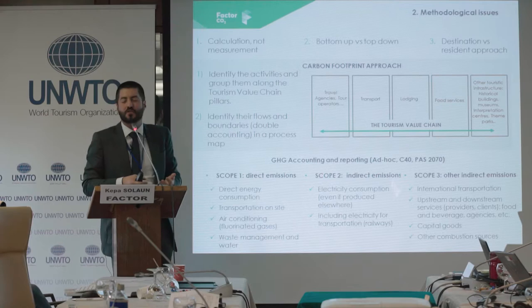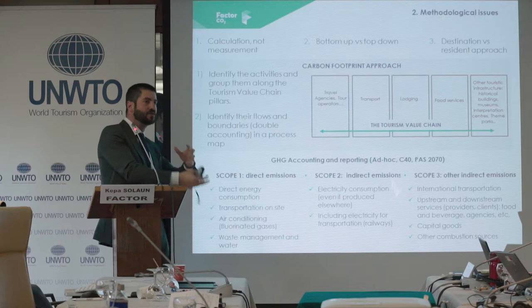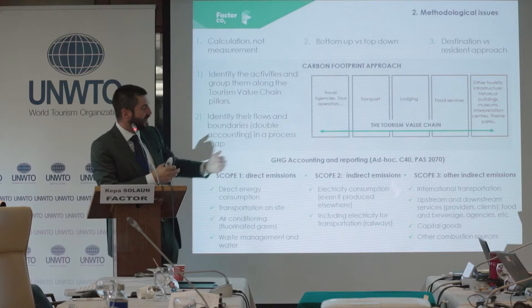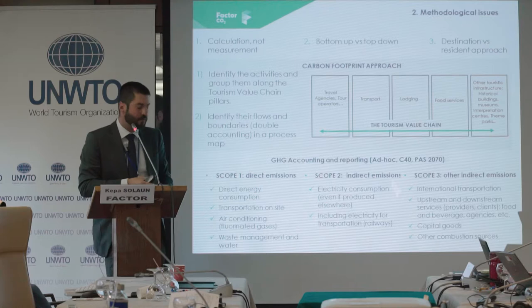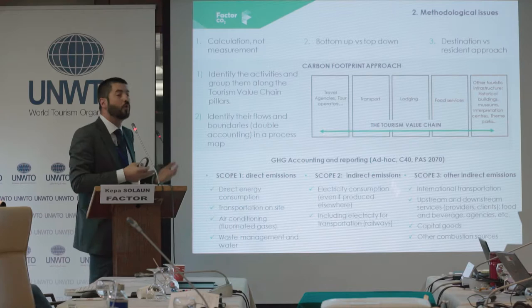There are several methodologies. You may find very specific methodologies, for example for hotels or for air emissions. We also have broader methodologies that can be used, for example, in a city where you can then allocate emissions to the sector. Basically, we talk about scopes — from the closest to the industry to emissions that are a bit further away. With direct emissions — scope 1 — we include direct energy consumption, the energy used in buildings, transportation on site, fluorinated gases used in air-conditioning systems, and waste generation and management.